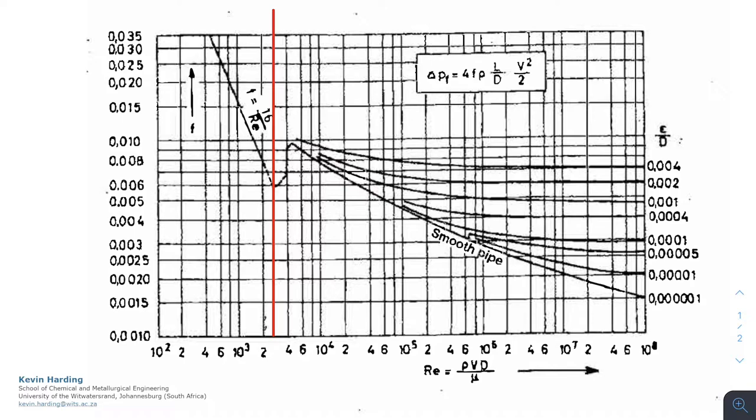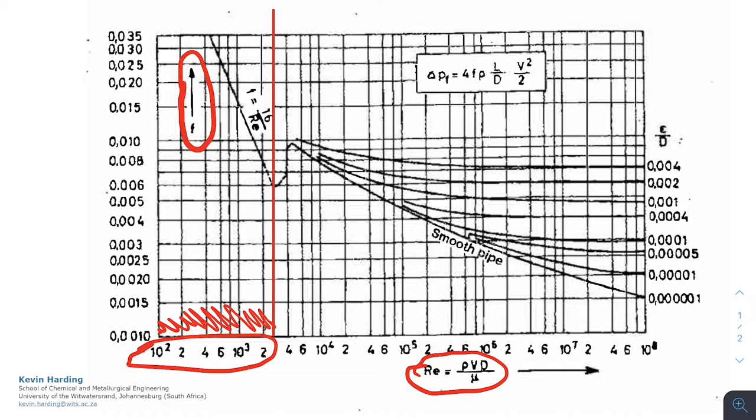In the laminar zone, for a Reynolds number below 2300 on the left, in order to find the friction factor, or the Fanning friction factor F, we are going to need to find the Reynolds number, rho vd over mu. From that we read the value on the x-axis, we go up onto the line, and we can read the Fanning friction factor on the left.